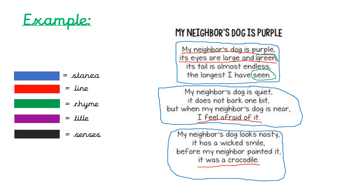I'm going to take my green pen — because in my key I need green for rhyming words — and I'm going to put a little green line around the two words that rhyme: green and seen. You can go through the whole poem and find all the rhyming words, but I'm just going to do one with you as an example. Next, I need to find my title in the poem. The title tells you the name of a composition of writing. At the very top in bold capital writing: My Neighbour's Dog is Purple. I'm going to highlight that in purple.